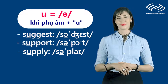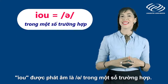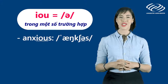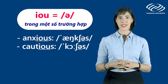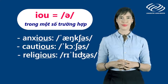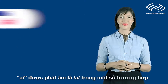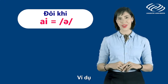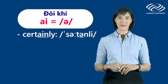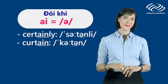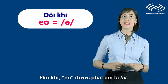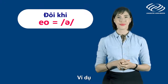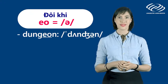I-O-U is pronounced as 'uh' in some cases too — for example: anxious, cautious, religious. And sometimes A-I is pronounced as 'uh' — for example: certainly, curtain. Sometimes E-O can be pronounced as 'uh' — for example: dungeon, surgeon.